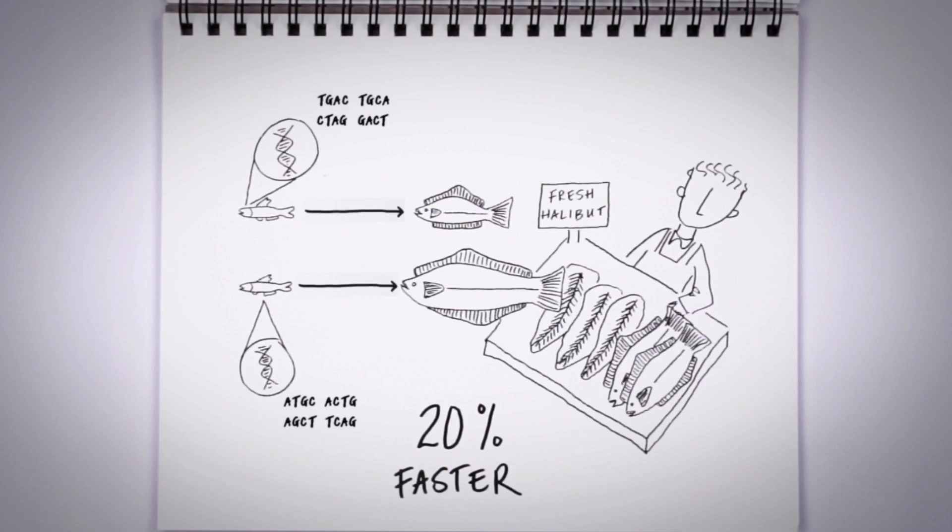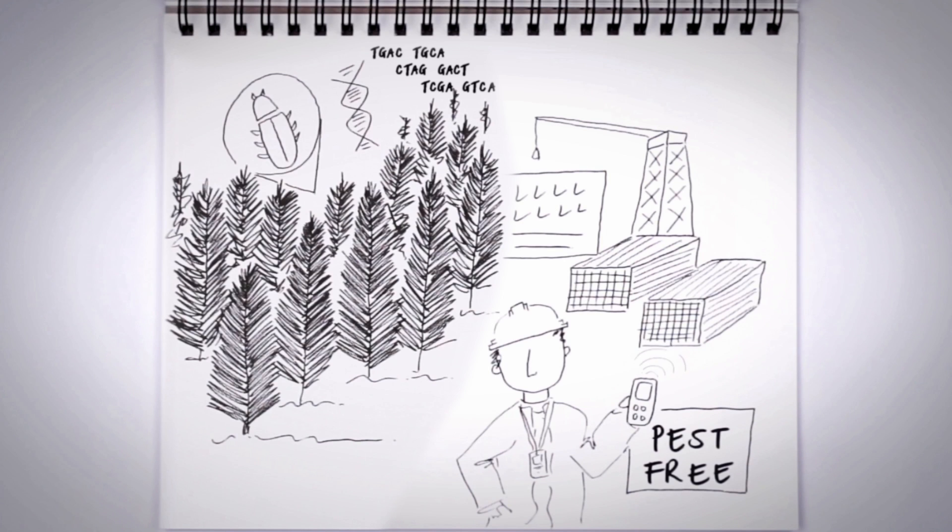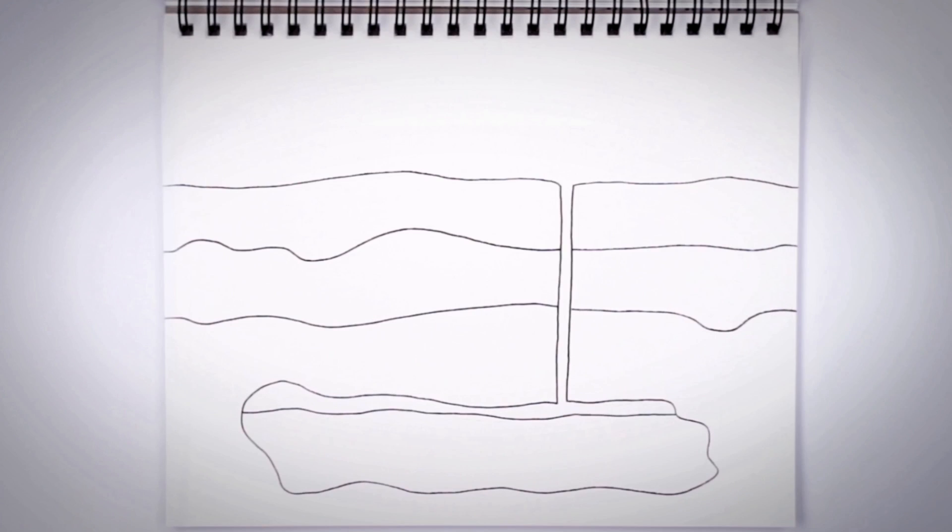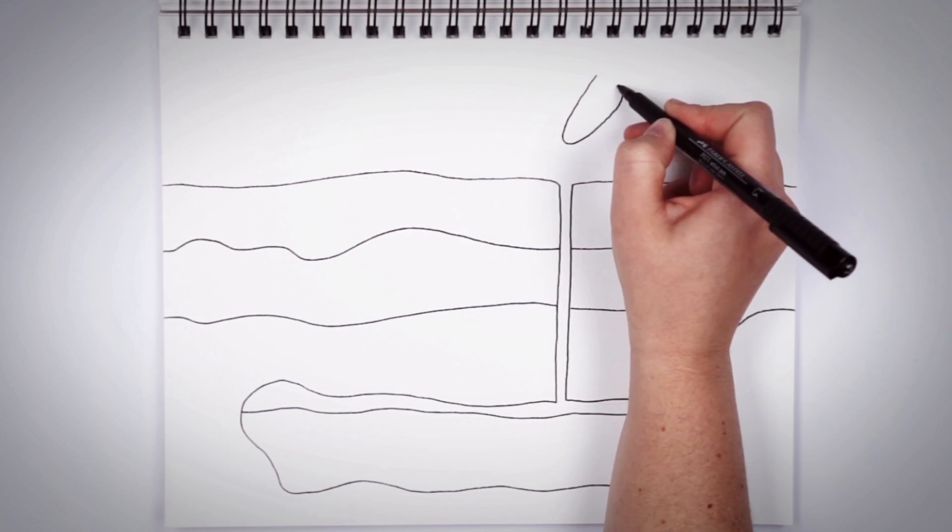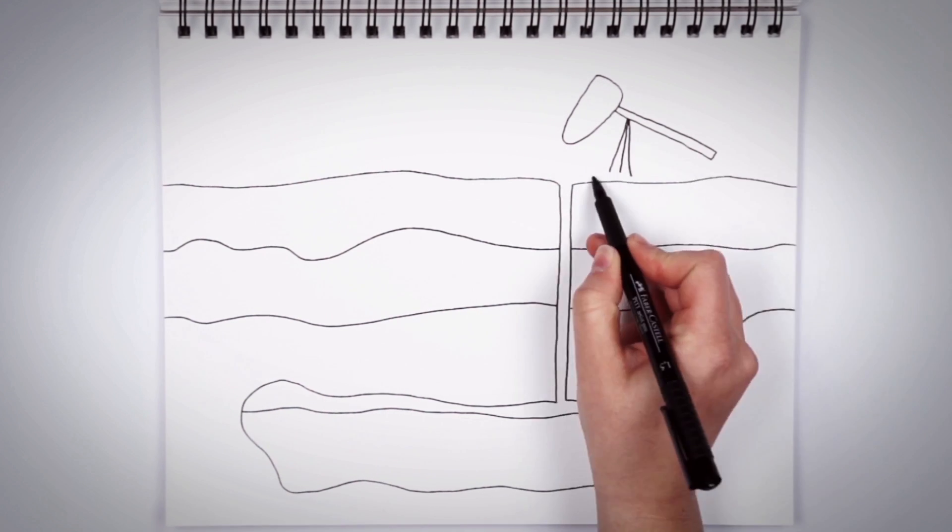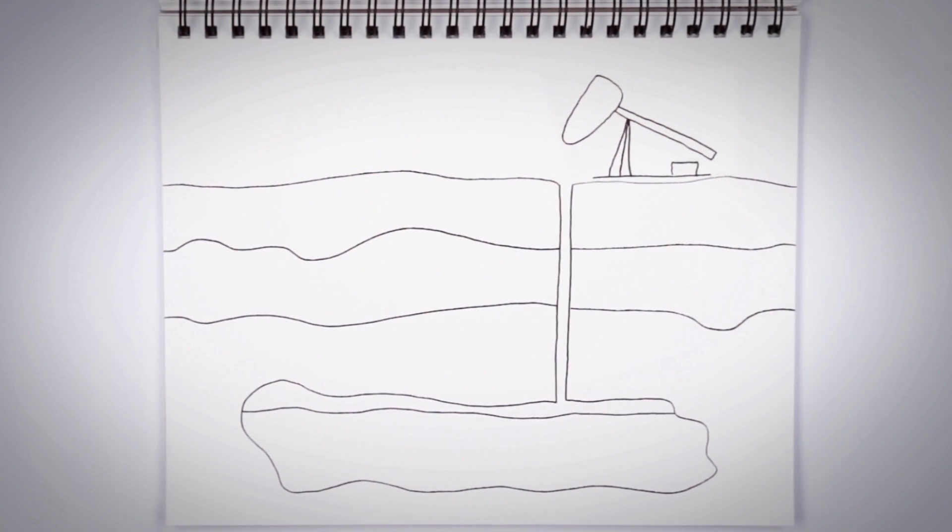Food production, fisheries, forestry - that all makes sense. But what about other industries? In the energy sector, we're focused on bacteria and other microscopic organisms that can have positive and negative impacts on the industry.